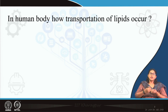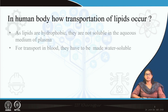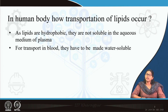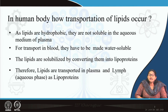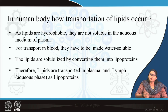In the human body, how does transportation of lipids occur? As we discussed in our previous class, lipids are actually hydrophobic. So they are not soluble in the aqueous medium of plasma — and remember, all enzymes work in the aqueous phase. For transportation as well as metabolism, these lipid particles have to be made water soluble by formation of lipoprotein. Basically, lipoproteins are the solubilized form of lipid by which they can be transported and metabolized in the aqueous medium of blood or plasma.